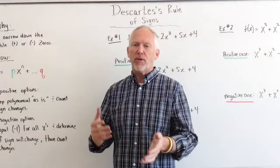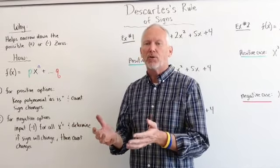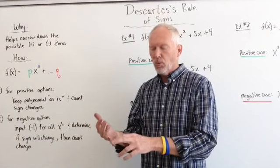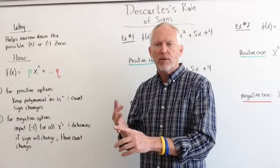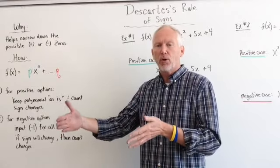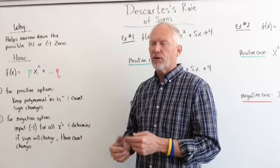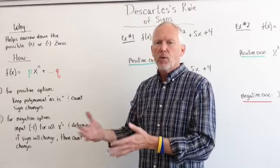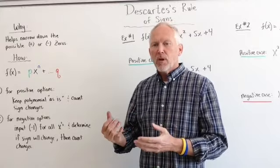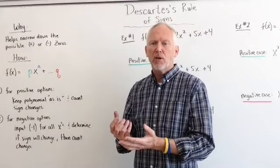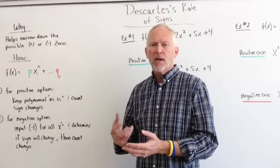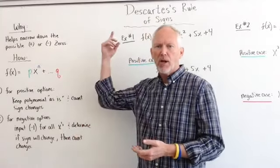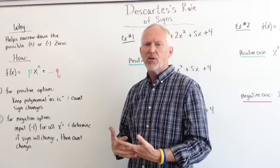When do we use Descartes' Rule of Signs? In a previous video, we talked about how we can use the rational zero theorem to help create a list of possible zeros. When the function gets more difficult and challenging to factor, we have to be more creative. We have tools like the rational zero theorem and factor by grouping. But after the rational zero theorem, we have a lengthy list of positive and negative options, so we need another tool to narrow down those options. Descartes came up with a great idea — his change of signs rule.